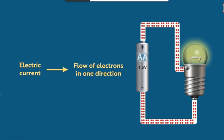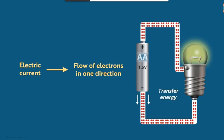Electric current means the flow of electrons in one direction. We should remember that electrons always come out from the negative terminal of the battery, flow through the bulb, and then reach the positive terminal of the battery — this is how the circuit gets completed. This is called electronic current. The energy also transfers in that same direction — from the negative terminal of the battery to the positive terminal through the bulb — which is the exact direction of transfer of electric energy.